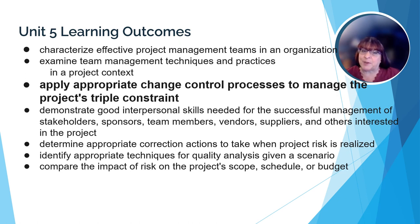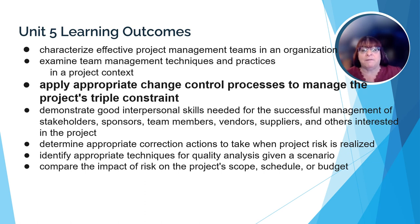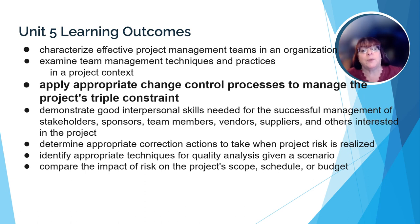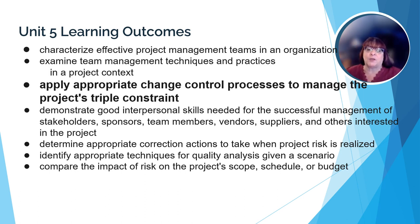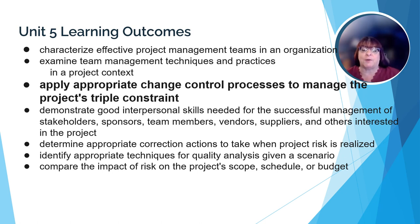Speaking of the triple constraint, once the project is underway, it's easy to get caught up in the day-to-day activities and forget to keep an eye on the budget, schedule, or the scope of the project. A good project manager will refer back to the planning documents to ensure that the project is still in line with the original plan. If it's not, the project manager and their team need to have in place controls that will help them manage things that need to be changed from the original plan.